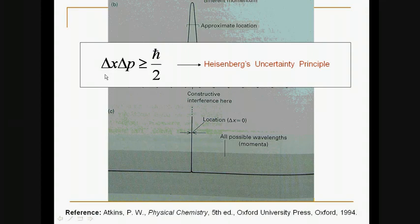This basically tells us that if we have large delta x, we have small delta p and vice versa. Or if you go to one of the limits, let's say where delta p is zero, then we get delta x to be infinite, which means that we have no idea about where the particle is if we know its momentum.